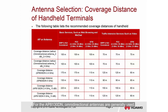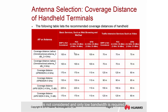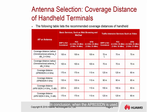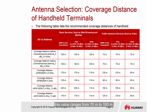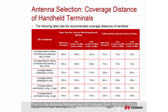For the AP 8130DN, omnidirectional antennas are generally used. The 2.4 GHz gain is 4 dB and the 5 GHz gain is 7 dB. The coverage distance is 100 meters when EIRP limit is not considered and only low bandwidth is required, and 70 meters when high bandwidth requirements must be met. In conclusion, when using AP 8030DN the spacing between APs is about 110 meters, or about 80 meters when the EIRP limit is considered. When using AP 81 series with omnidirectional antennas, the AP spacing ranges from 70 to 100 meters, meaning the distance between two APs ranges from 120 to 200 meters.